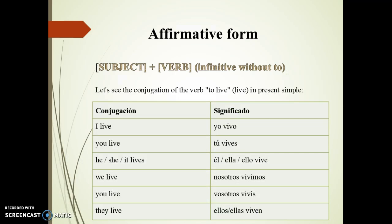In this lesson, we are going to see the affirmative form. The construction of the present simple in English is really easy, having the next structure: subject plus bare infinitive without 'to'.